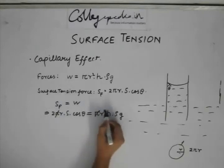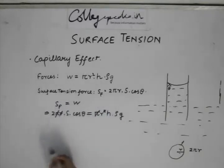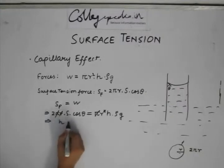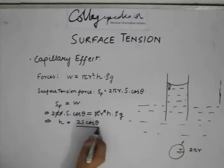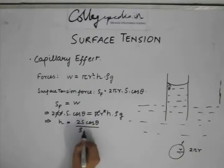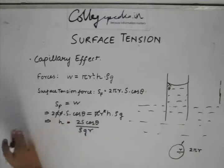π gets cancelled, 1 r gets cancelled. And what we have is h is equal to 2s cos theta divided by ρ g r, which is same as we found out by the pressure method.